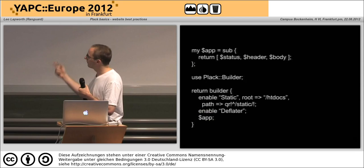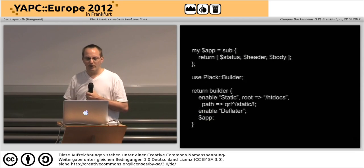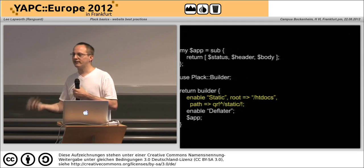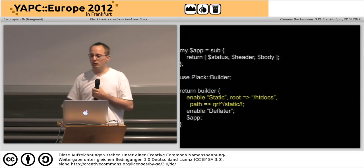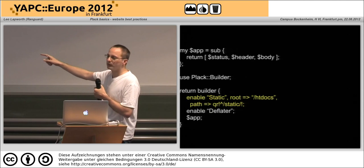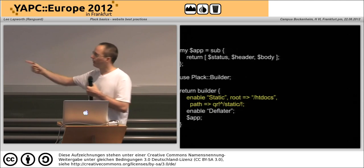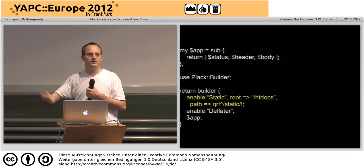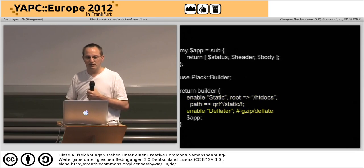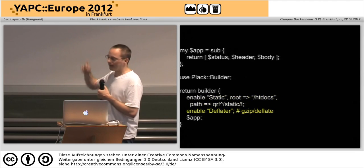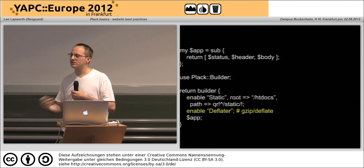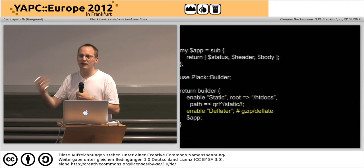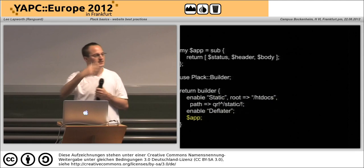One of the middlewares is Static, which enables you to serve static content — your images, CSS files, whatever it might be. We're going to enable the Static middleware, tell it where our document root is, and pass a path as a regular expression — so anything that matches /static will be served by this middleware directly. After that we enable Plack::Middleware::Deflater which does gzip compression. I want that after the static content because compressing my JPEGs won't give me any advantage.